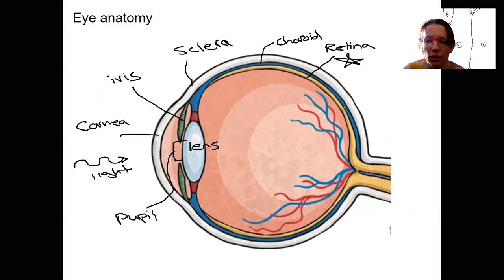The fovea is not shown in here. I'm just going to draw one right here. It's a special region within the retina where most of your vision occurs. So the whole job of the lens is to focus this light at the right location, which is the fovea.